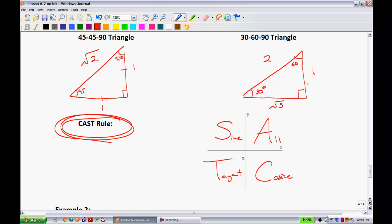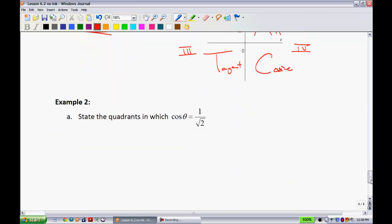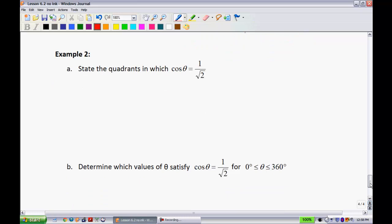So, what I mean is every one of the ratios, for instance, is positive in quadrant 1. This being quadrant 1, 2, 3, and 4. When you get into quadrant 2, the only thing that is positive is the sine ratio. The only thing that's positive in quadrant 3 is the tangent ratio. And the only thing that's positive in quadrant 4 is the cosine ratio. So, you'll see how we'll use this information for this next question.